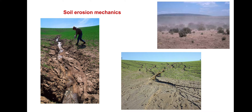Soil erosion mechanics can be divided into three components: detachment, transport, and deposition. Water droplets and flowing water detach soil particles; flowing water then transports these detached particles downstream. Deposition occurs when flowing water can no longer transport soil particles because flow rate decreases as water infiltrates, or as slope or roughness changes. Some particles are deposited within a few meters, while others are transported off the field with runoff water.